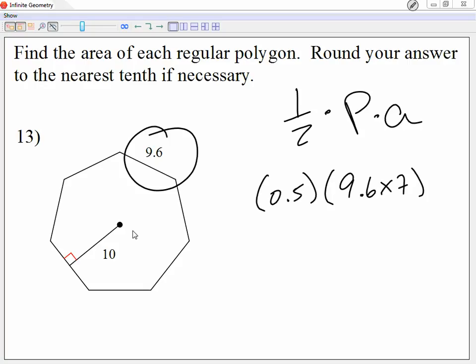Now for the apothem, it's 10. Remember, not the radius, because the radius is from the center to a corner. So it's not the radius, it's the apothem. Let's multiply those out. What is it? 336.